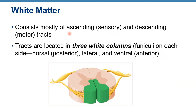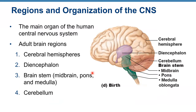White matter consists of ascending (sensory) and descending (motor) tracts. There are three white columns or funiculi on each side: dorsal, lateral, and ventral columns. The anterior funiculus is shown in the front, the lateral funiculus on the side, and the dorsal funiculus at the back.